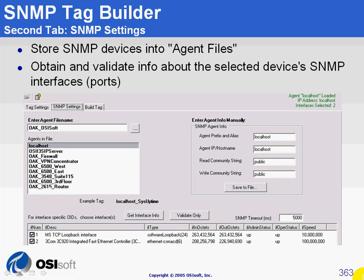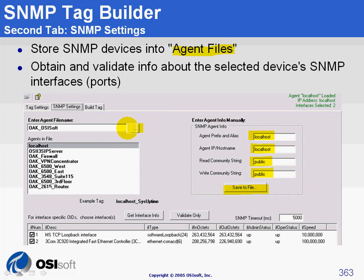The second tab is not even related to PI — it's the SNMP settings, where you can simply determine an alias for your device, its hostname or IP address, the read community string, and the write community string. Something interesting you can do is save these settings to a file. These files are called agent files. With this button here, you can open agent files, which will list the devices that are in them. You can choose one, see the information, and then you're ready to query the SNMP agent on the device.